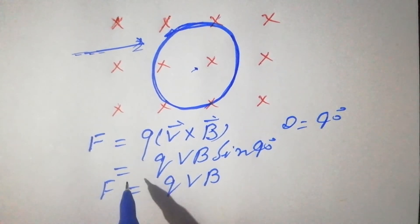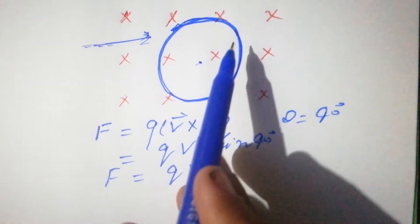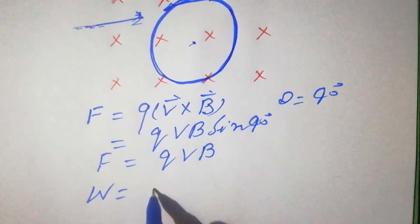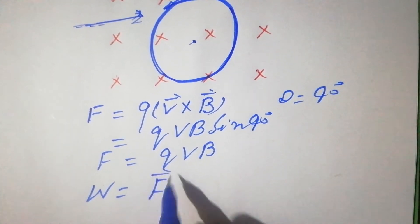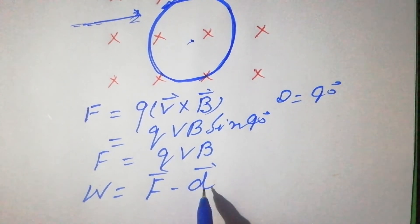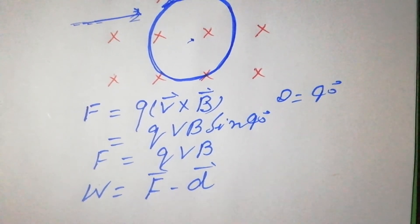Our target is to find the amount of work done by this magnetic force. Work done is the dot product of force and displacement: W = F · D. The direction of displacement is the same as velocity.